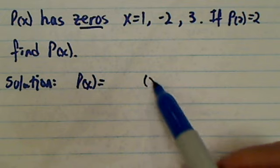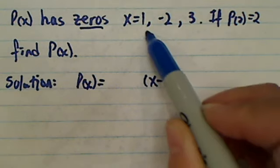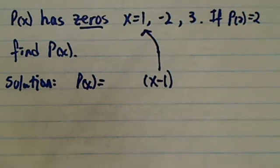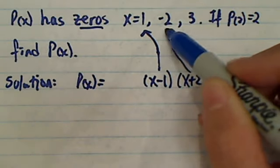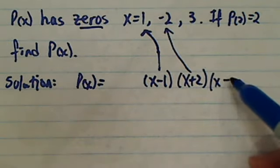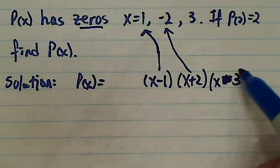...x minus one because that gives me zero of x equal to one, right. And then x plus two that'll give me zero for this one, and x minus three will give me zero for this one.